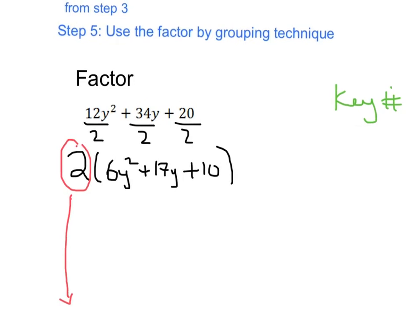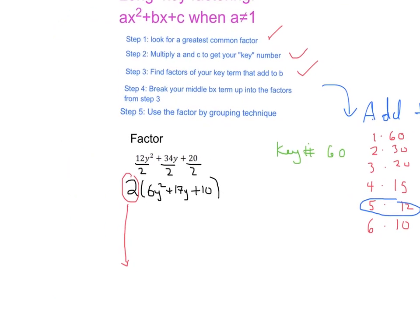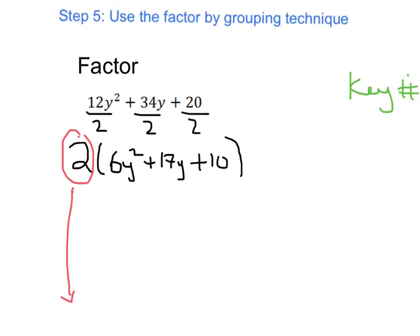So we are going to break this middle term up into our factors, which are 5 and 12. So this is going to be, we're going to have 6y². Then I'm going to break this middle term up into a positive 5y and a positive 12y, and then we have our plus 10 over here at the end.